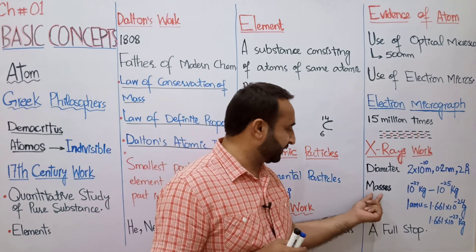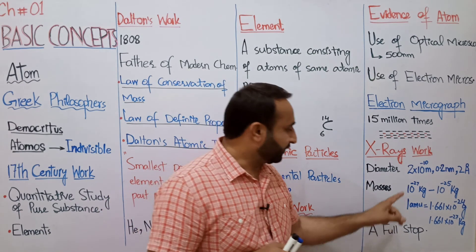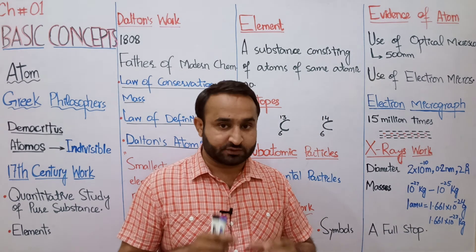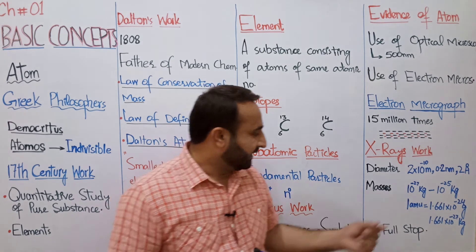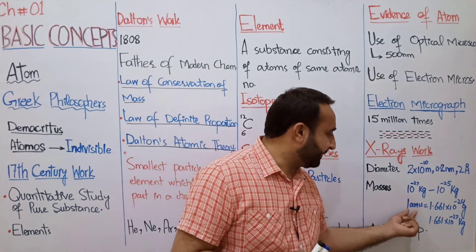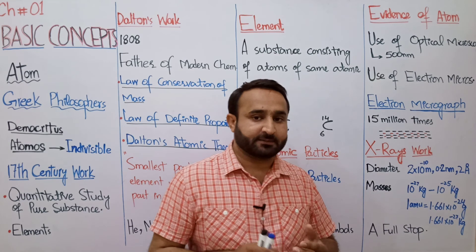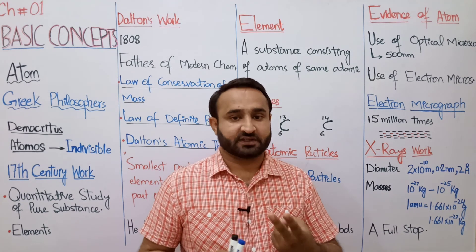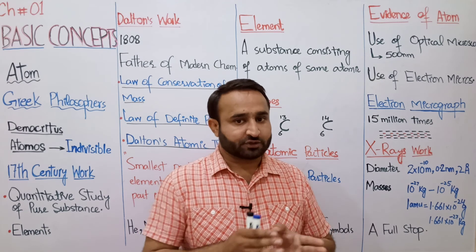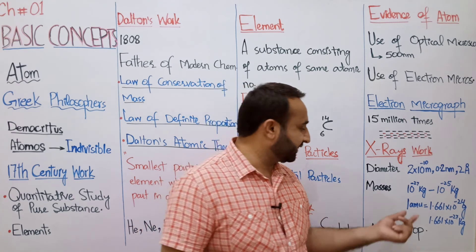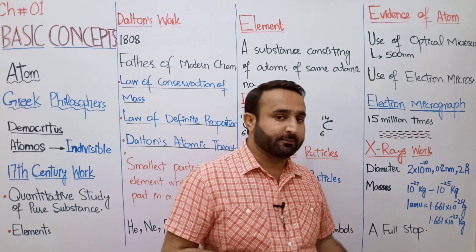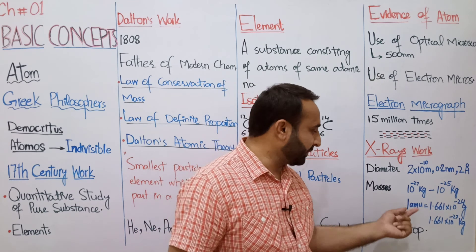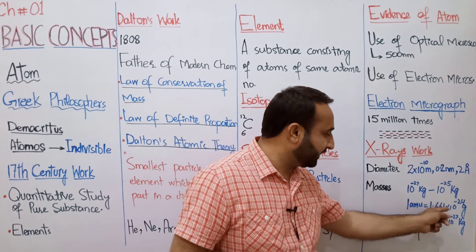Atoms کے masses 10⁻²⁷ kg سے 10⁻²⁵ kg کے درمیان ہوتے ہیں۔ Atom کے masses کے دو units ہیں: پہلا AMU یعنی atomic mass unit، جو کہ carbon-12 کے 1/12 حصے سے compare کر کے نکالا جاتا ہے۔ دوسرا gram، جس کا تعلق concept of mole سے ہے۔ 1 AMU = 1.661 × 10⁻²⁷ kg۔